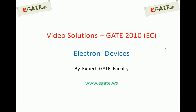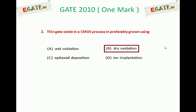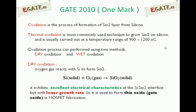We are discussing solutions for GATE 2011 ECE on the topic of electron devices. This is a question from GATE 2010: thin gate oxide in a CMOS process is preferably grown using (a) wet oxidation, (b) dry oxidation, (c) epitaxial deposition, or (d) ion implantation. The correct answer is dry oxidation.